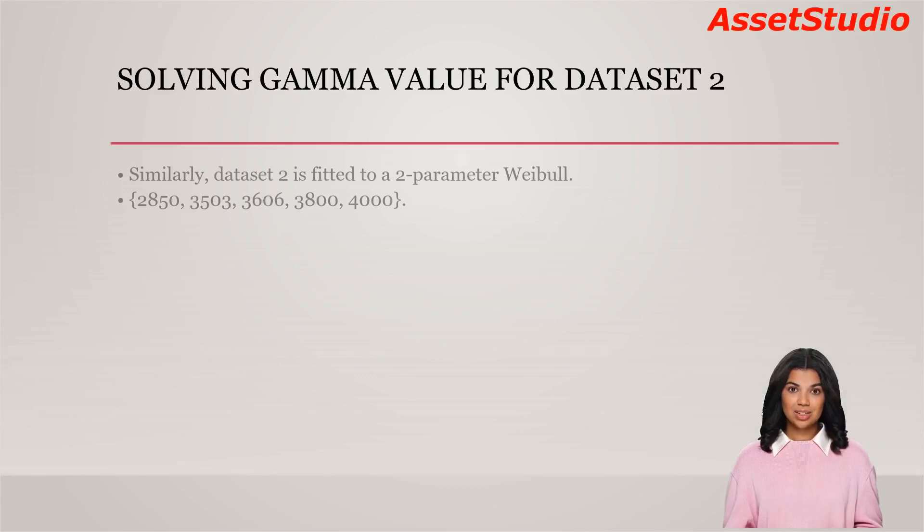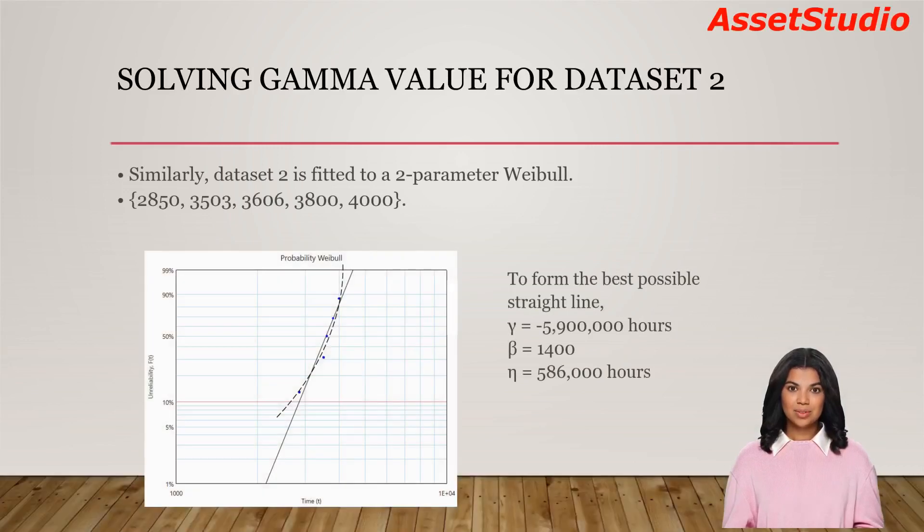Let's proceed to analyze dataset 2. The expected gamma value is close to 2965. Since smallest failure point for dataset 2 is 2850, it should be somewhere below 2850. Notice that the data points form a curvature facing upwards.